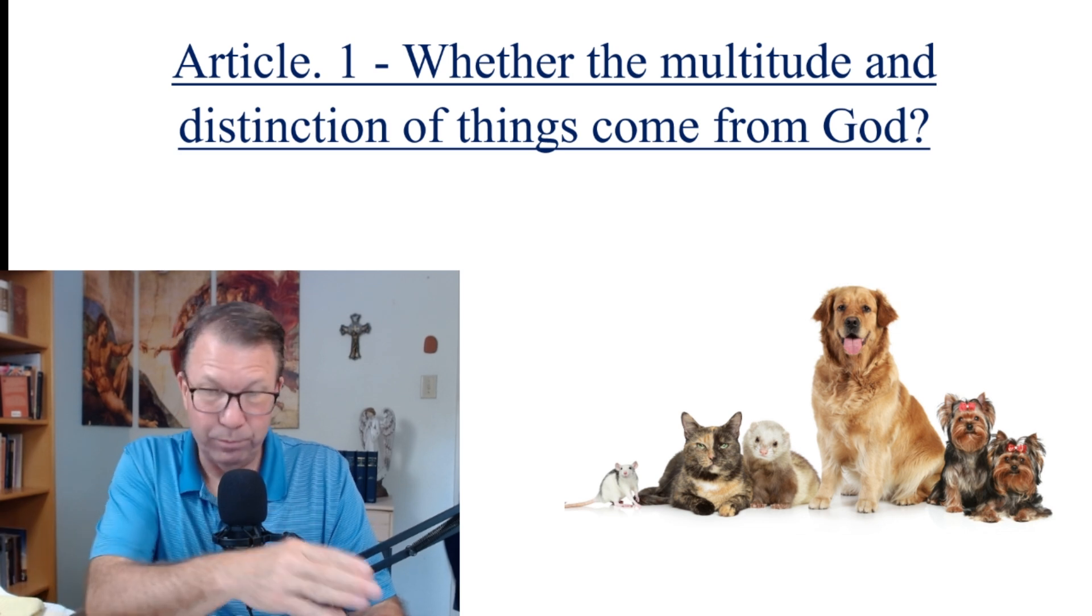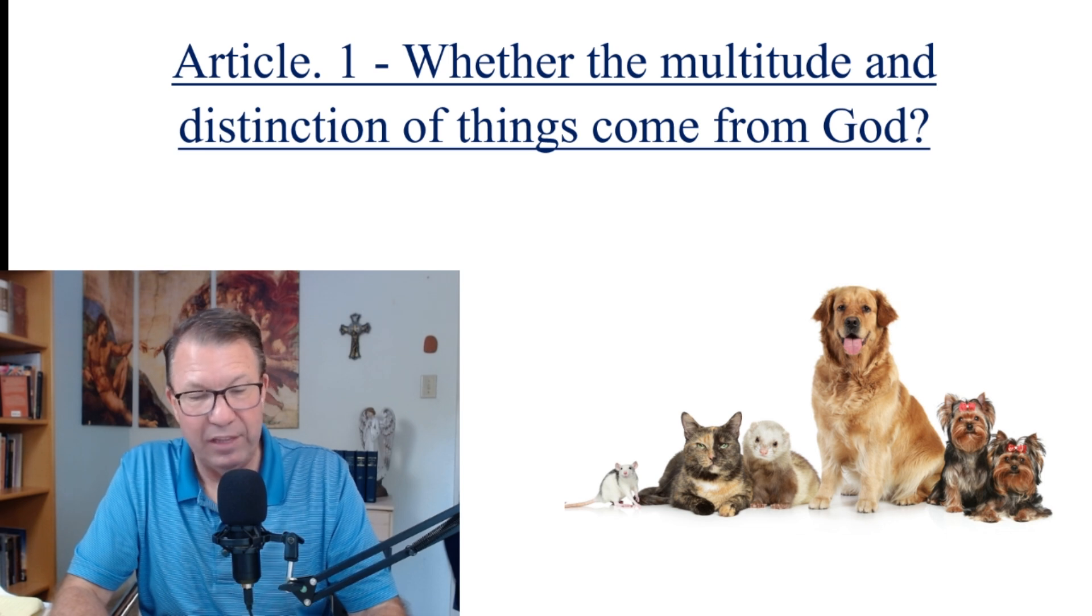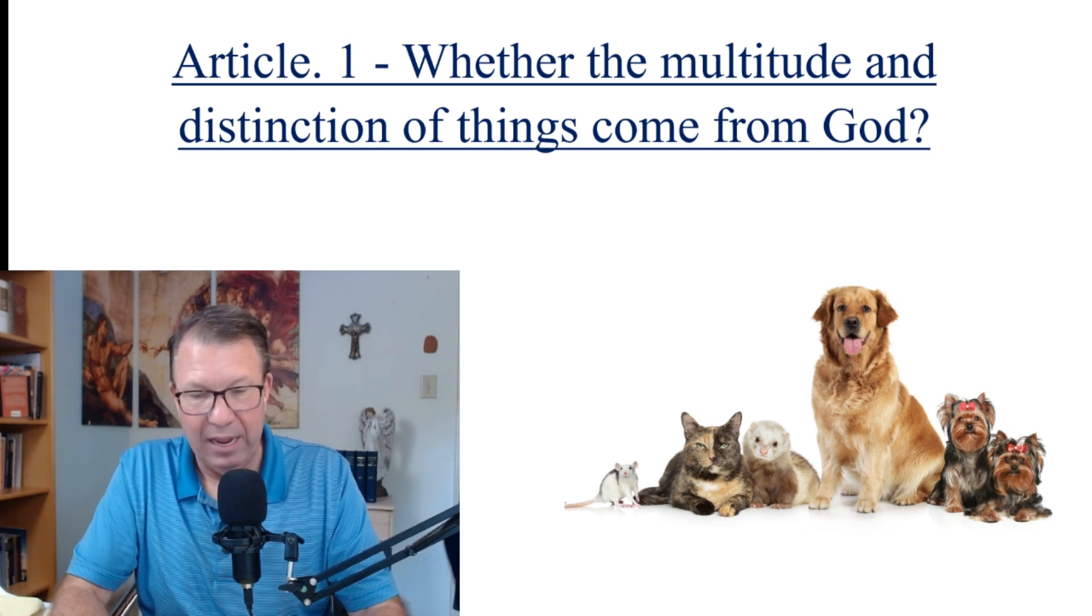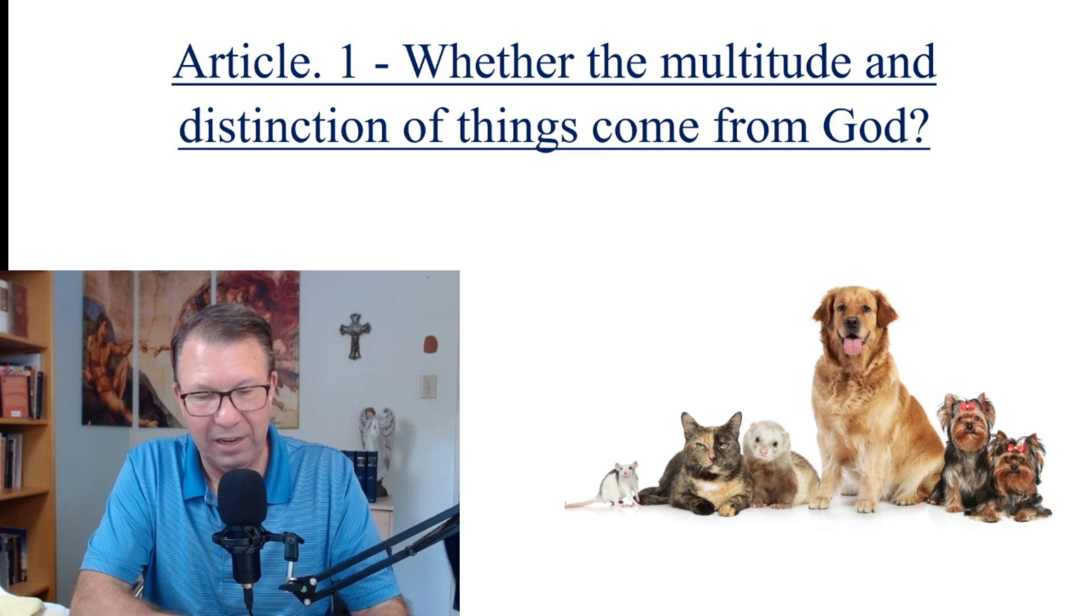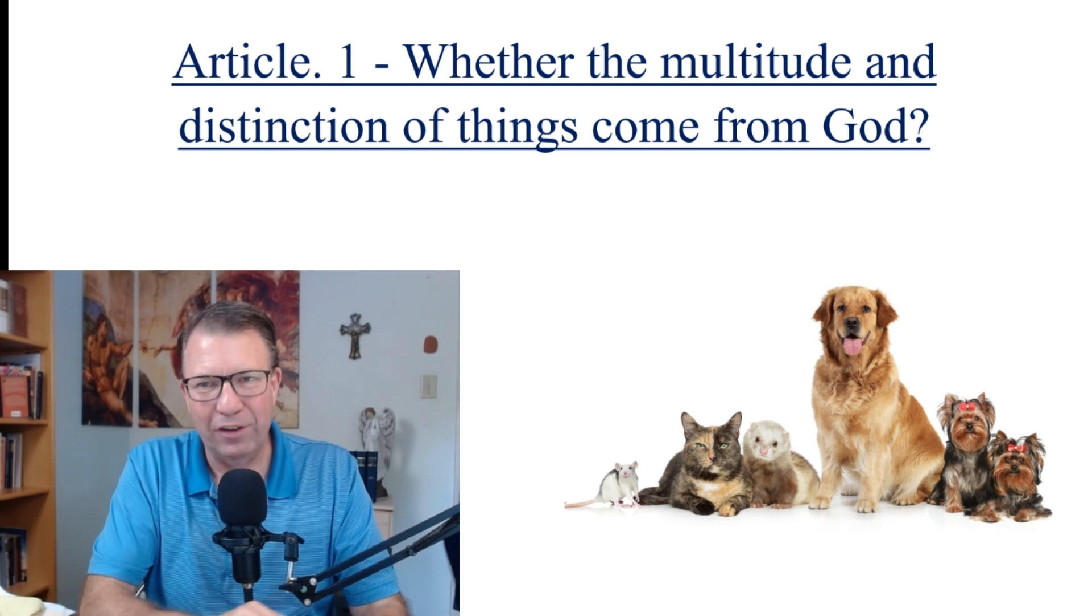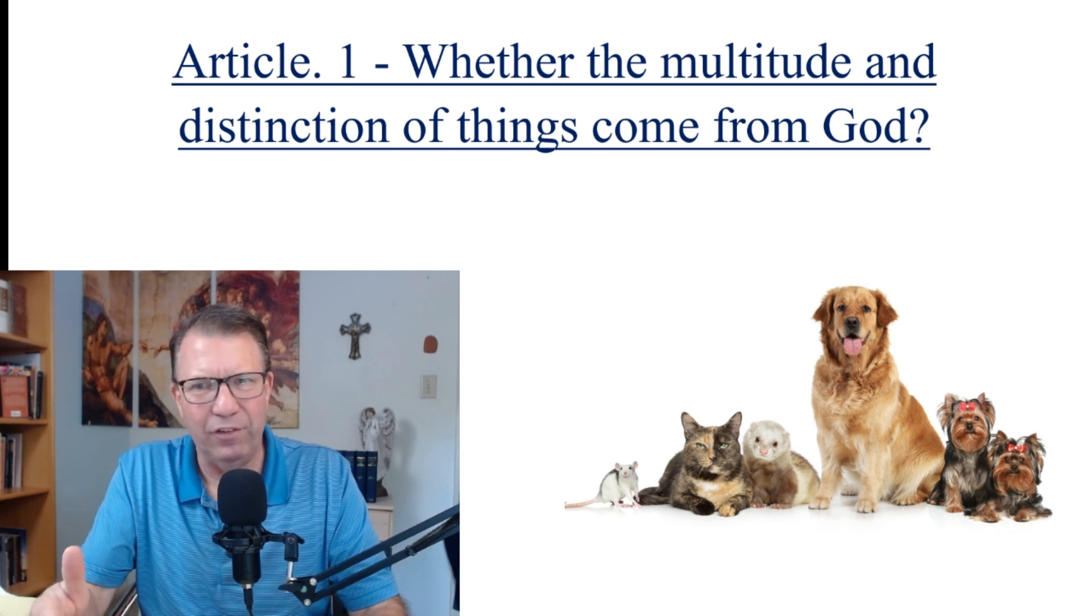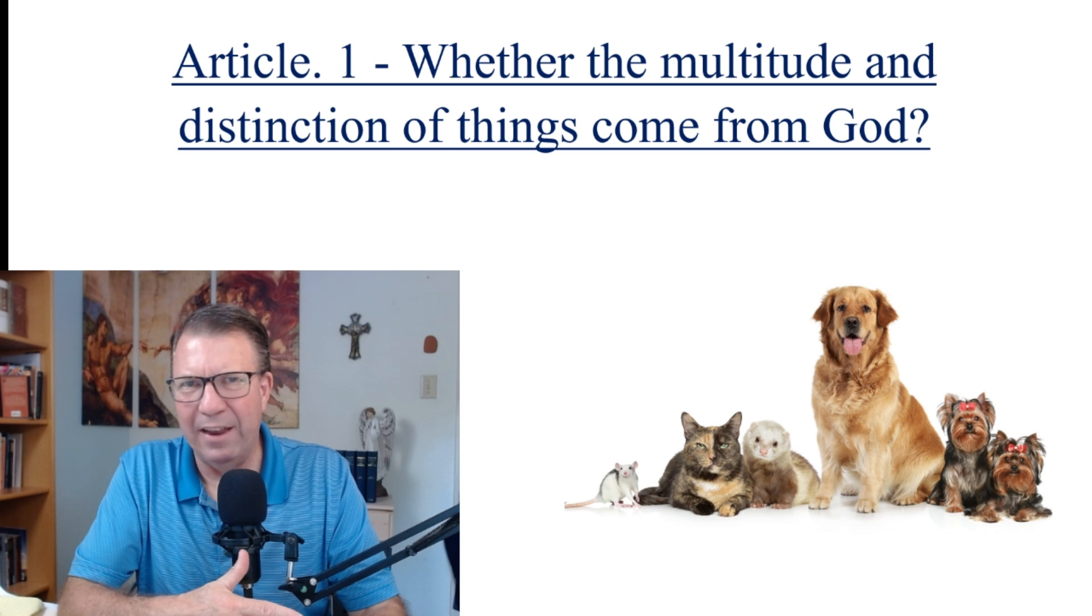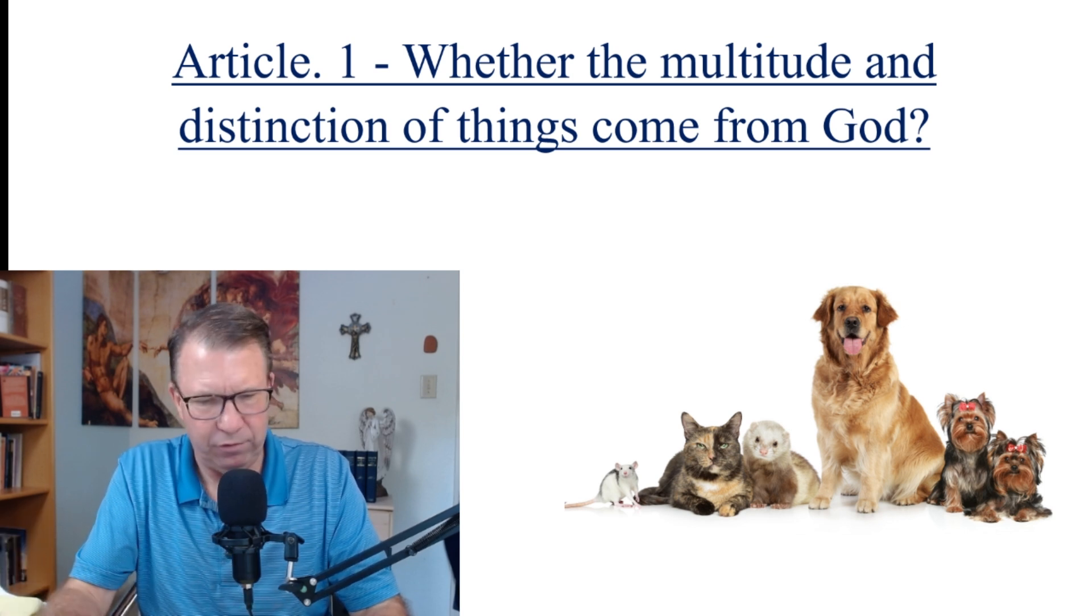Anaxagoras, another pre-Socratic, however, attributed the distinction and multitude of things to matter and to the agent together, and he said that the intellect distinguishes things by extracting what is mixed up in matter. And as I mentioned yesterday, if you ever get a chance to go back and study these pre-Socratics, they are fascinating philosophers, and they have had a big influence even on modern philosophers today.